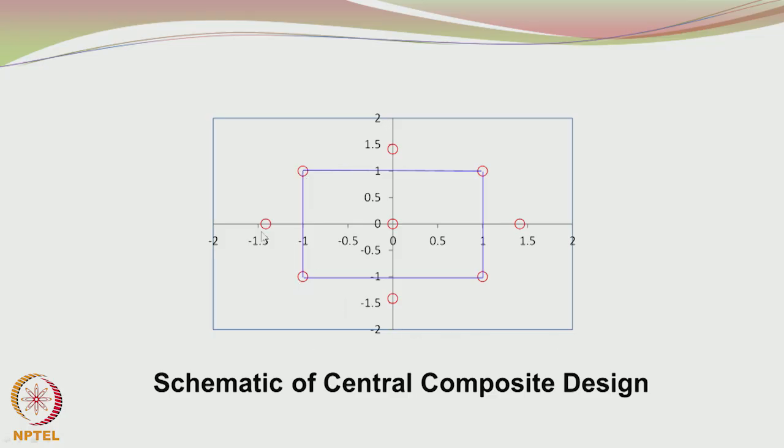In addition to that, you have the axial points. You can see this is the first axial point, second axial point, third axial point and fourth axial point. The first, second, third and fourth are given arbitrary fashion. You have four runs, 2 power 2. Then you have 2k axial points where k is the number of factors. So you have again four axial points that makes it a total of 8. But that is not all.